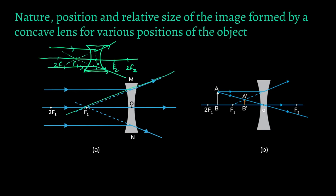Draw a ray parallel to the principal axis. At the point where this ray meets the optical axis, keep your scale so it meets the ray and also passes through the focus. You don't draw the diverging ray randomly because if you retrace it, it won't go through the focus. Draw the diverging ray so that when retraced, it passes through the focus. Your scale should lie on both the point on the optical axis and on the focus.